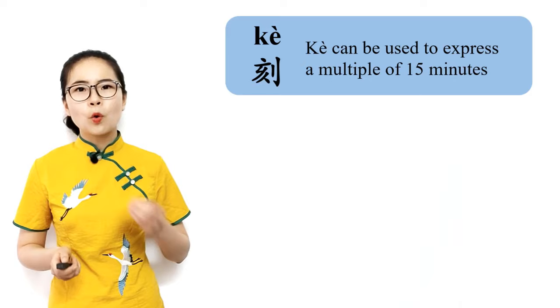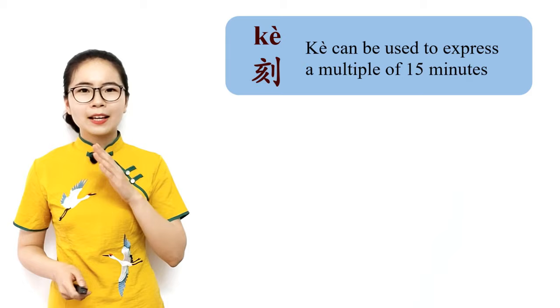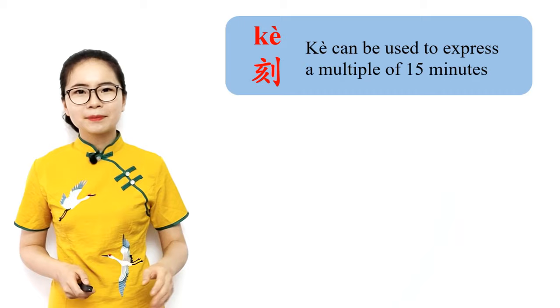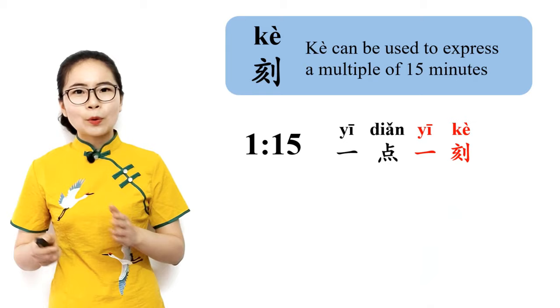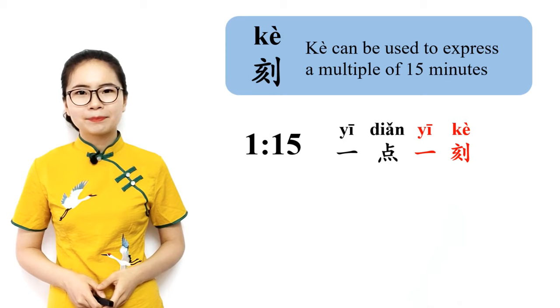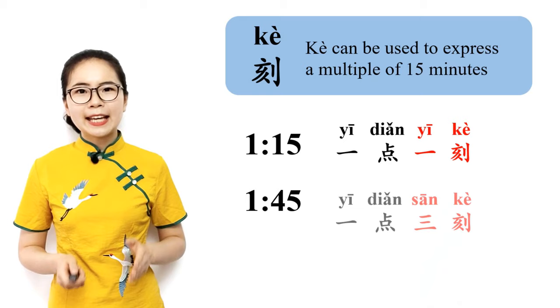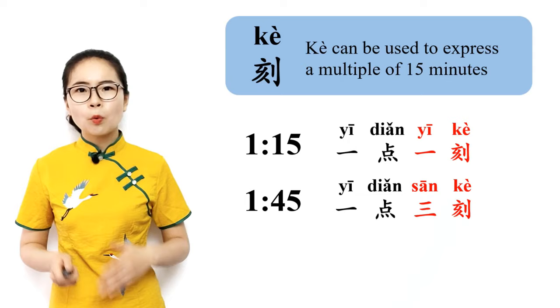Next, when the minute part is a multiple of 15 minutes, you can use 刻, which means a quarter of an hour or 15 minutes. Please repeat after me: 刻, 刻, 刻. For example, if the time is 1:15, you could say 一点一刻 — 一点 is one o'clock and 一刻 is one quarter, which is 15 minutes. And if the time is 1:45, you could say 一点三刻 — 一点 is one o'clock and 三刻 is three quarters, which is 45 minutes.